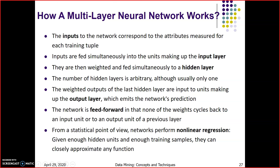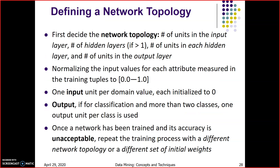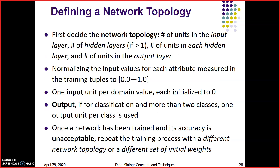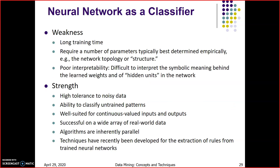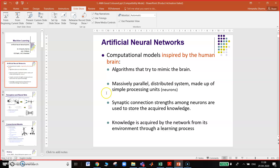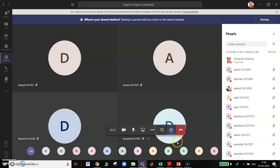Multi-layer neural networks working is very simple, just like two-layer neural networks — defining network topology and neural network as a classifier. This is the general structure of ANN. Thank you very much.